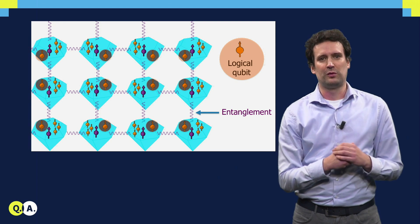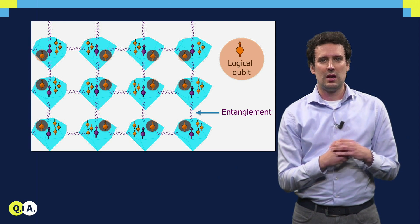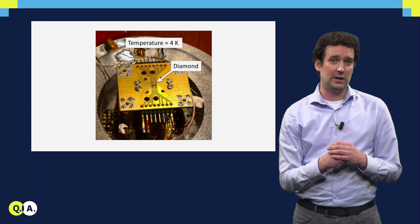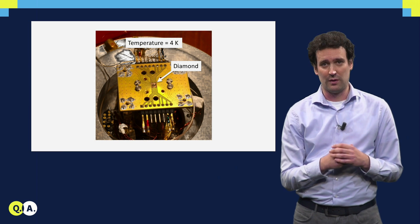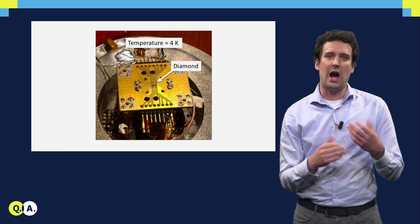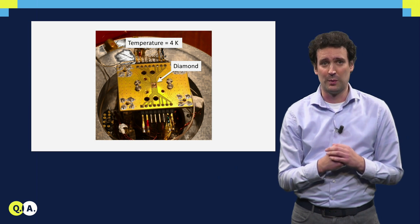What kind of samples do we use for this? Here you see an image of a little diamond wired up in a chip in a cryostat, which we bring to 4 Kelvin. That is quite a bit of higher temperature than you will typically see for other qubits.